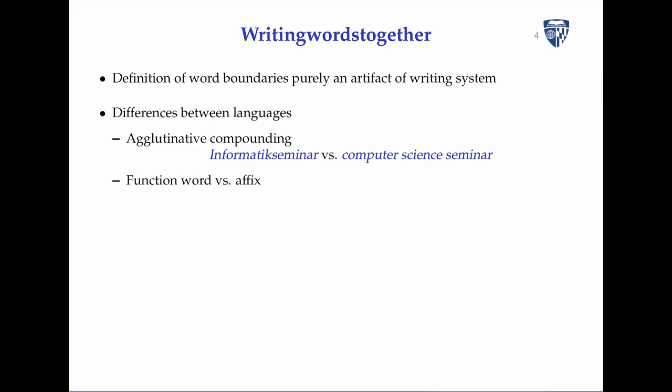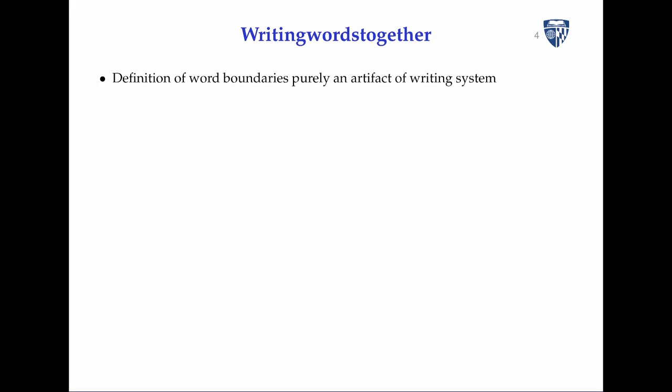Differences between languages: some do a lot of compounding. German does a lot of compounding — for a computer science seminar, English writes it as two words, while German simply attaches 'seminar' directly to 'Informatik'.